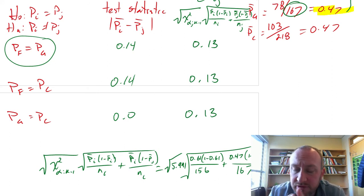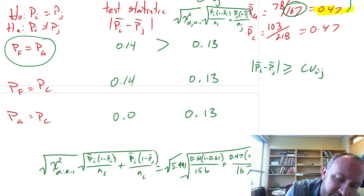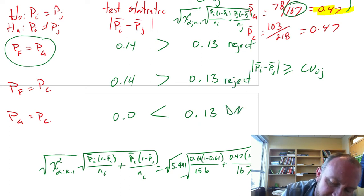So our rejection rule, we reject if that point estimate, if that is greater than or equal to the corresponding critical value. So this is greater, this is greater, this is not greater. So here we can reject. Here we can reject. And here we certainly do not reject.